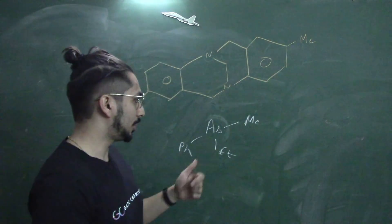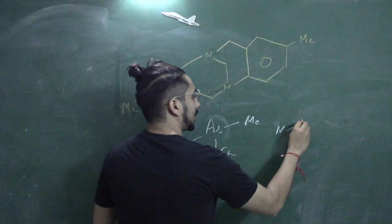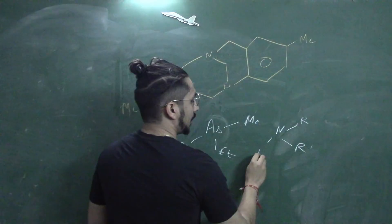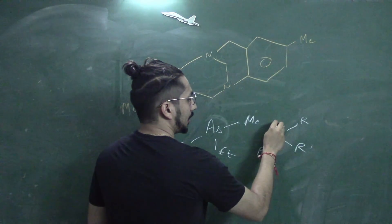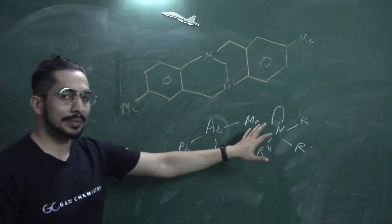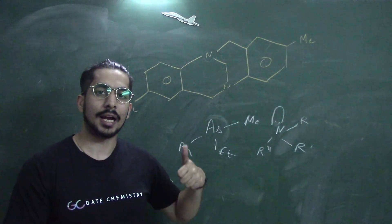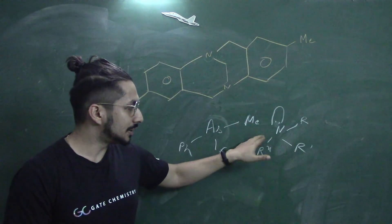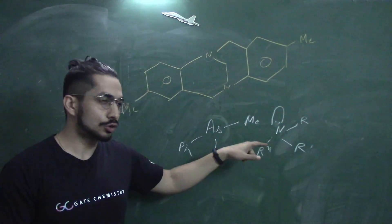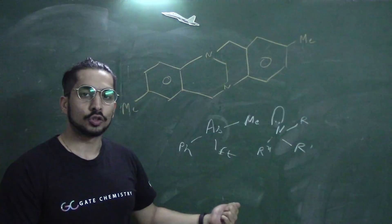So with three different groups attached and a lone pair acting as the fourth group, we effectively have four different groups on the atom. This applies to arsenic, phosphorus, sulfur, and nitrogen as well. If you take nitrogen with three different groups R, R', and R'' attached, the lone pair of electrons also acts as a fourth group, making nitrogen potentially optically active. Arsenic and phosphorus belong to the same group as nitrogen, so they are also optically active.